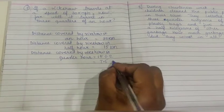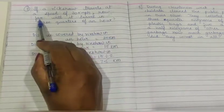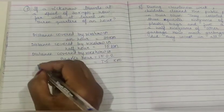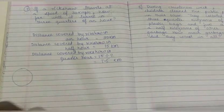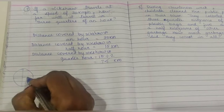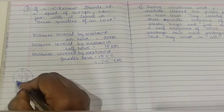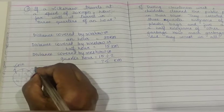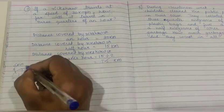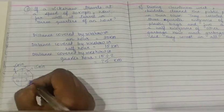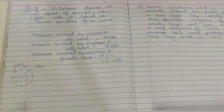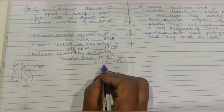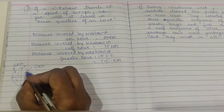Now, what they have asked: how far will it travel in 3 quarters of an hour? What is the meaning of 3 quarters? See, I am showing you — there is a circle which is your clock. When you divide into 4 parts, meaning 4 quarters: 1, 2, 3, 4. One quarter is 15 minutes. Two quarters means 30 minutes. And the entire circle means 60 minutes — 4 quarters. Now we have to find out 3 quarters. If in 1 quarter it travels 7.5 km, how much distance will it cover in 3 quarters?